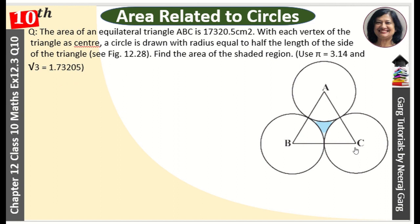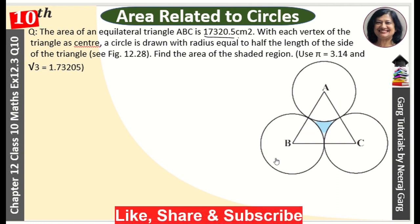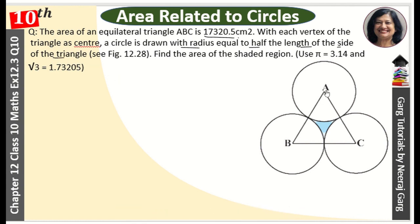ABC is an equilateral triangle whose area is given. With each vertex of the triangle as a center, a circle is drawn. The radius is equal to half the length of the side of triangle. Now we don't know the side of the triangle. What is the area of equilateral triangle ABC? This is 17320.5 cm².